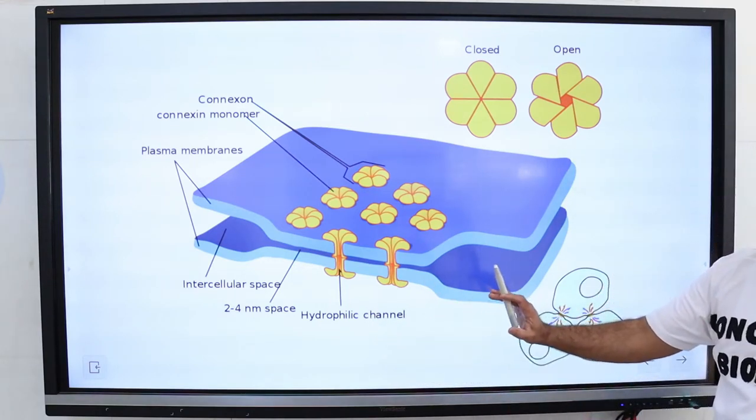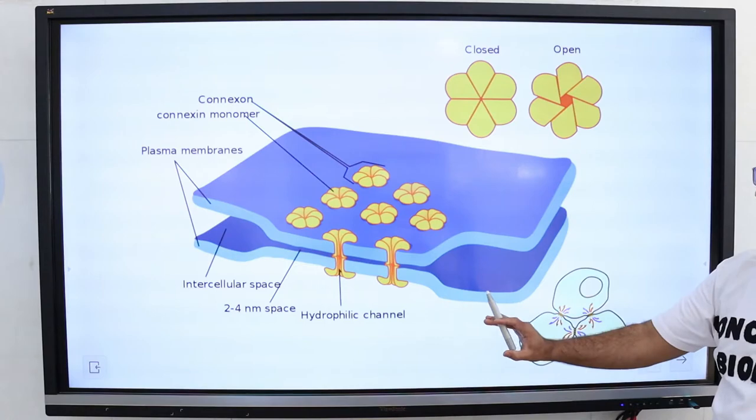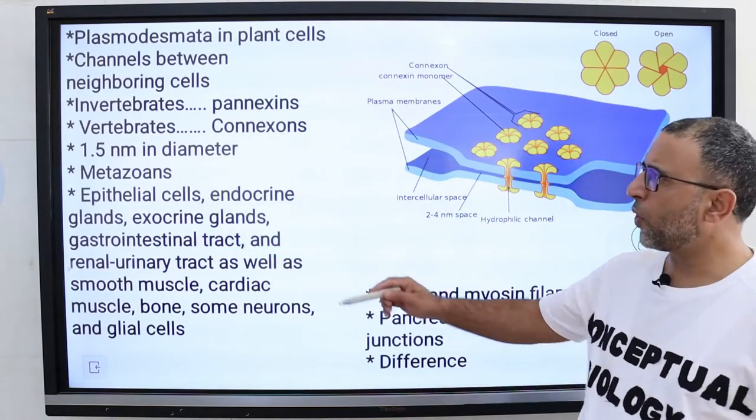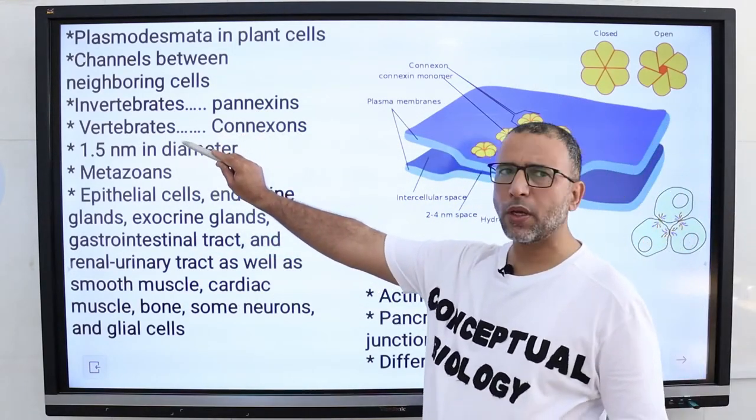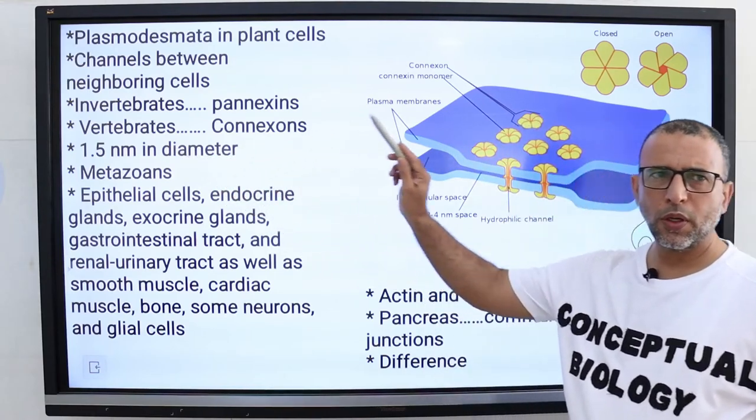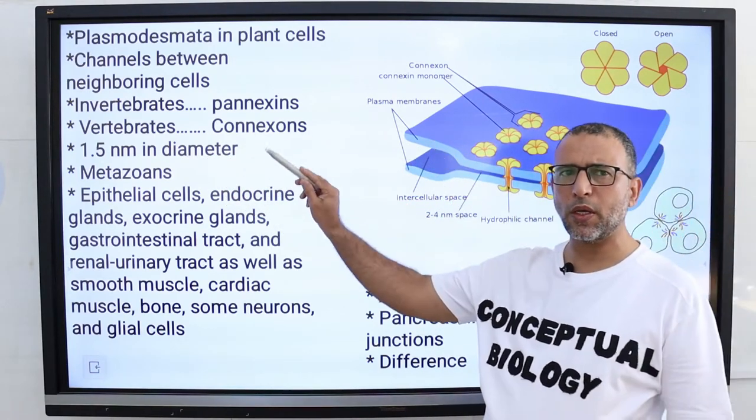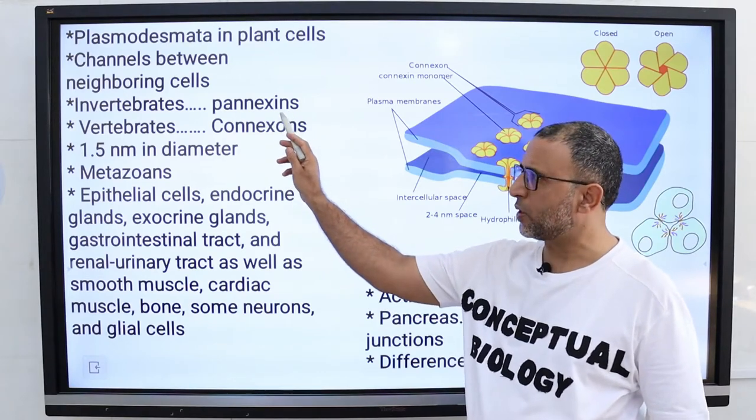Structurally, gap junctions are quite different from plasmodesmata. Gap junctions are found in invertebrates and vertebrates. In case of invertebrates, they are formed by proteins called pannexins.